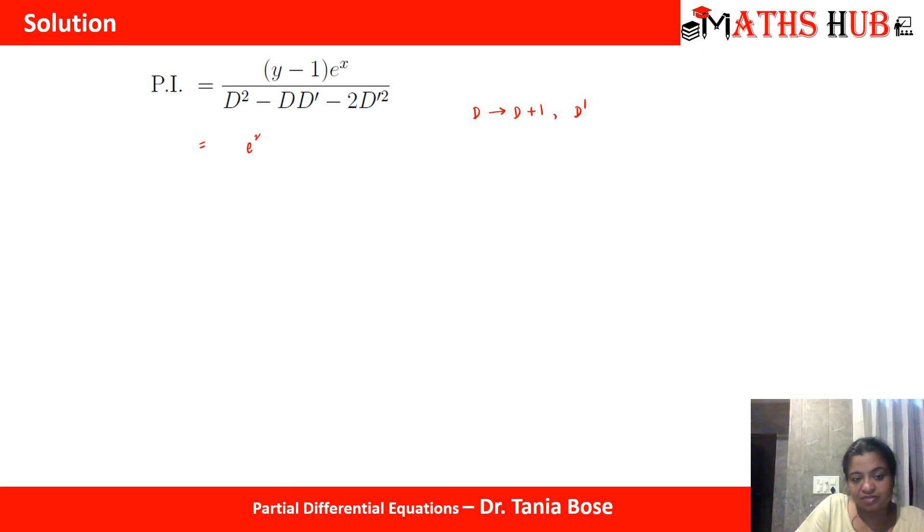e to the power x will move out and we are left with the denominator function as (d plus 1) whole square minus (d plus 1) into d dash minus 2 d dash square into (y minus 1). Let's open it up. When we open it up we will get the terms d square plus 1 plus 2d minus d d dash minus d dash minus 2 d dash square into (y minus 1).